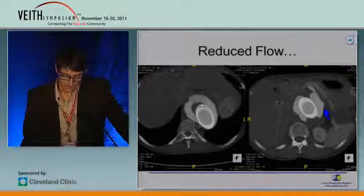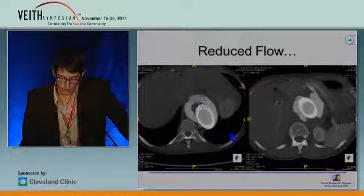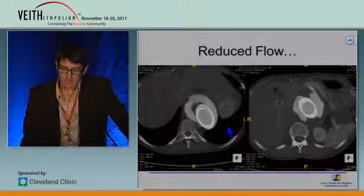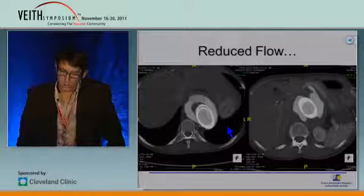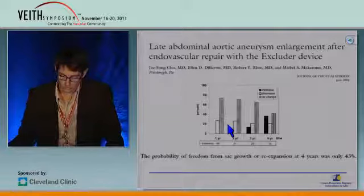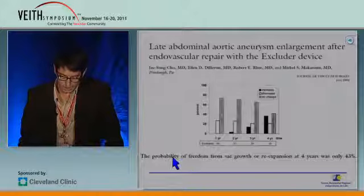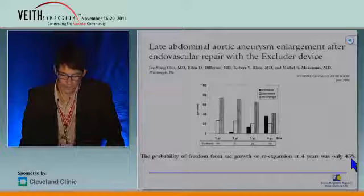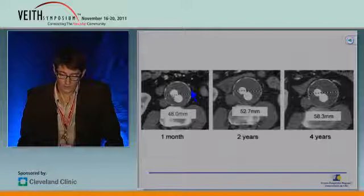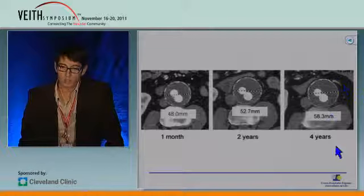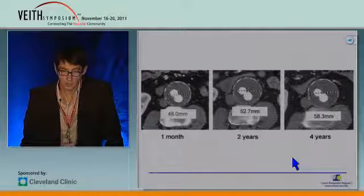Here you can see a patient treated with a multi-layer stent. This is the post-op CT — quite a large thoracoabdominal aneurysm. It's quite a frightening image, but it's normal to find such an image because we're actually implanting a porous endograft. We already have experience with porous endografts. Remember the experience with the first-generation Gore device: in a paper published in 2004, the probability of freedom from sac growth or expansion at four years was only 43%. In that same paper, we could see images of an excluded aneurysm with no endoleak, no contrast in the sac — but that excluded aneurysm was actually growing.